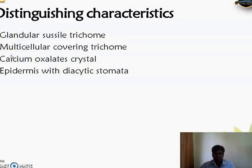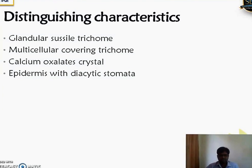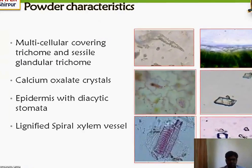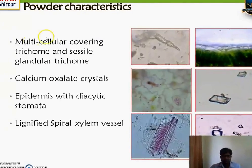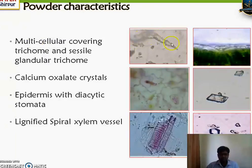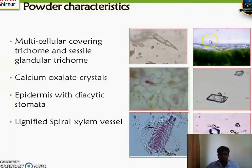The distinguishing characteristics of Vasaka include: calcium oxalate crystals, and epidermis with diacytic stomata. Palisade cells, spongy parenchyma, and collenchyma are not distinguishing characteristics as they are common. In powder characteristics, xylem vessels are distinguishing — there are different types of xylem vessels present. The multicellular covering trichome is found with a blunt end. The capitate glandular trichome has only a single small head with the stalk absent, so it is called a sessile glandular trichome. Calcium oxalate crystals have sharp edges and are easily distinguishable.